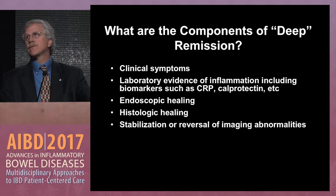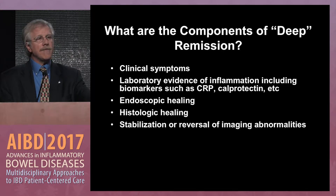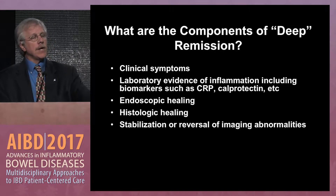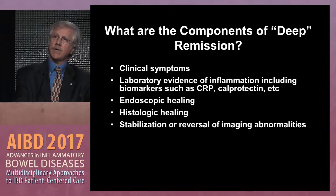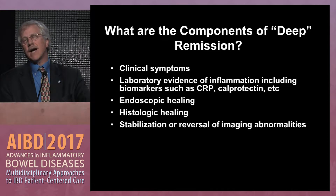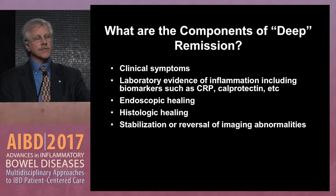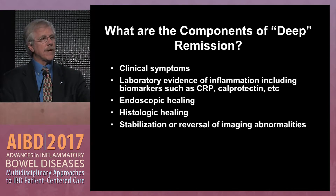We've been talking for the past several years about this concept of deep remission. What are the components? We want our patients to become clinically asymptomatic, with resolution of laboratory evidence of inflammation including biomarkers like CRP and calprotectin. We want endoscopic healing, and now in new clinical trials we're looking at histologic healing as the ultimate deep remission goal. And where areas can't be reached, we want stabilization or reversal of various imaging abnormalities.